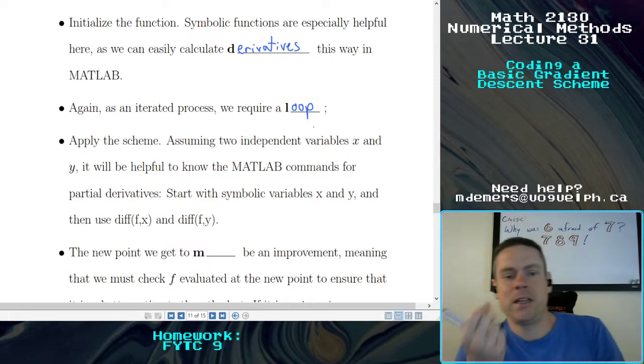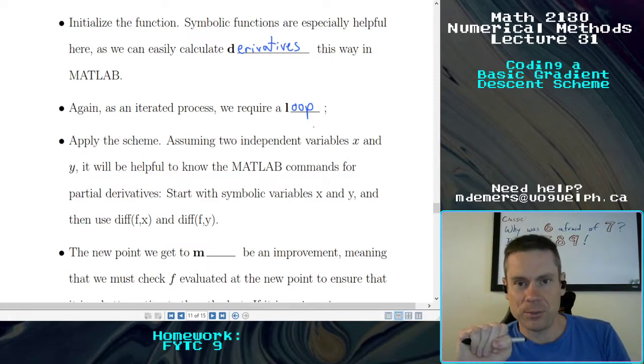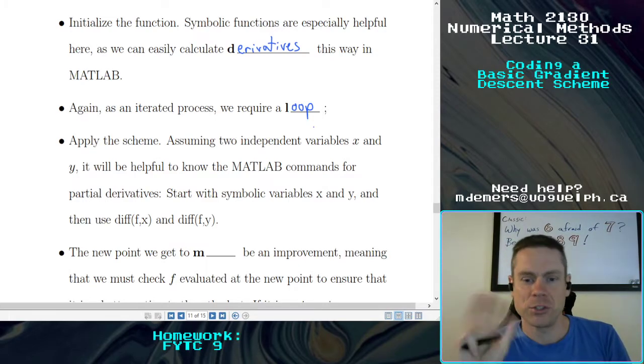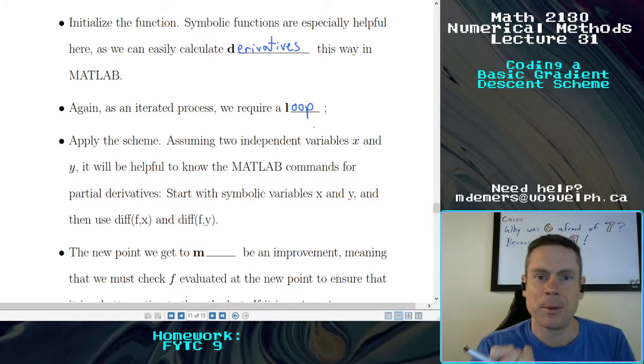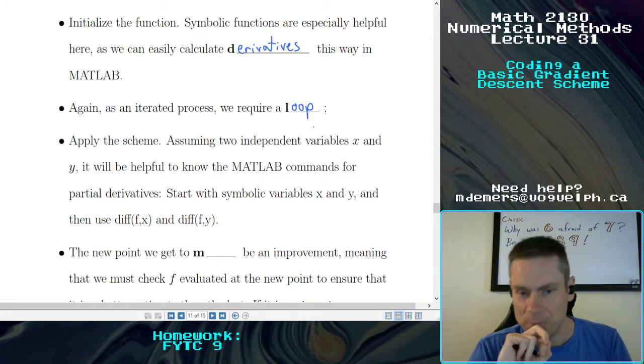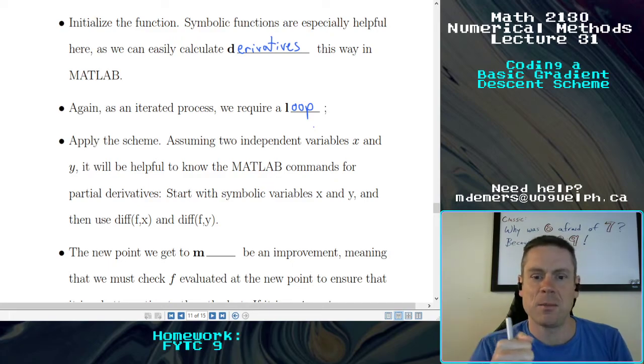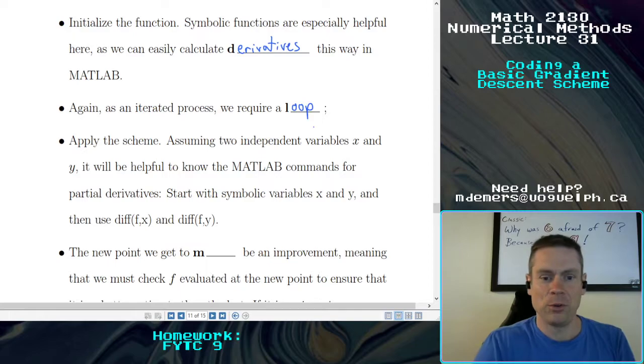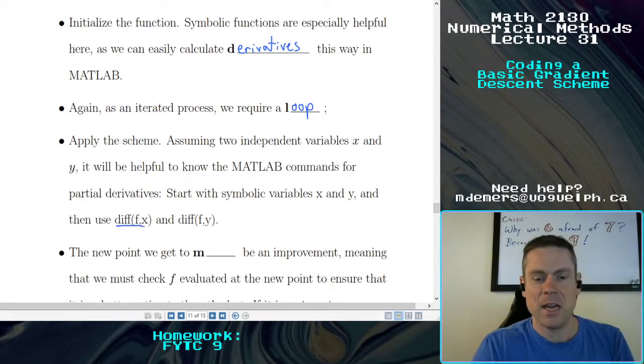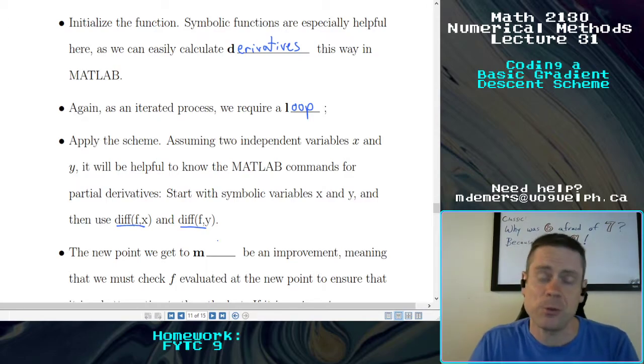If we have two independent variables, we're going to need to know how to do partial derivatives and we talked a little bit about this in the lab a few weeks ago, but here is some notation for you that you could use to work with. So we have the diff command and you just use two commands to tell you what to differentiate and what you want to differentiate with respect to.